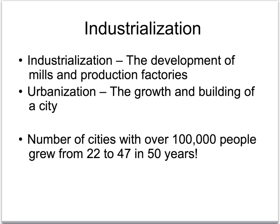Let's define industrialization and urbanization. Industrialization is the process of developing an industry — so mills, production factories, railroads as well. If we need railroads to get the product from the factory to the market, we'd add that as well — infrastructure. But anything related to industrial production: factories, mills, railroads — when you build the mill, when you create the railroad, that is industrialization.